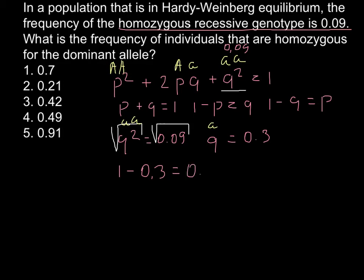That would be 0.7. And the question is, what is the frequency of the individual that is homozygous for the dominant allele? The question would be, what is the frequency here?